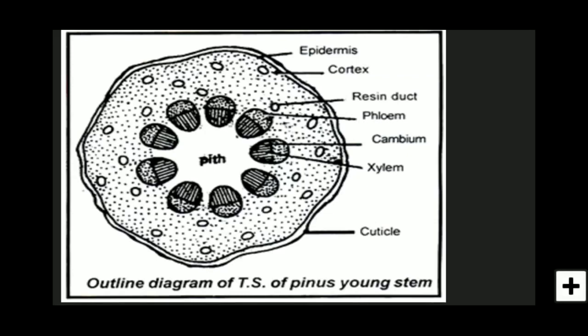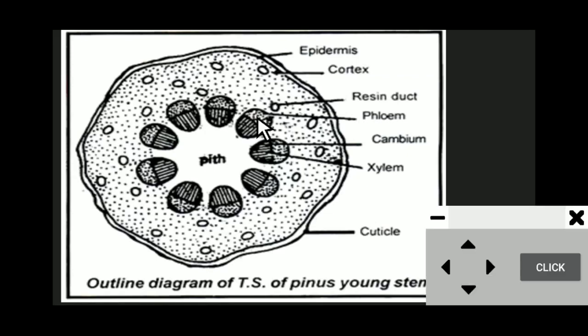The stem has differentiated into epidermis, cortex, endodermis, pericycle, vascular tissue, and then the pith. First comes the epidermis. Epidermis is irregular in outline and consists of a single layer of cells covered with a thick cuticle.